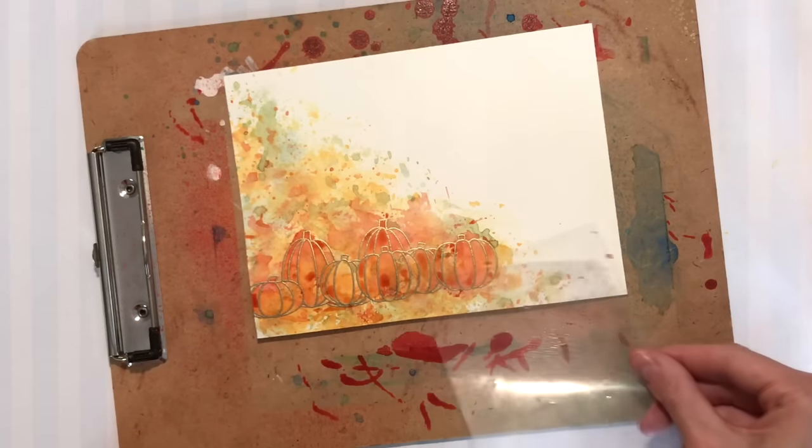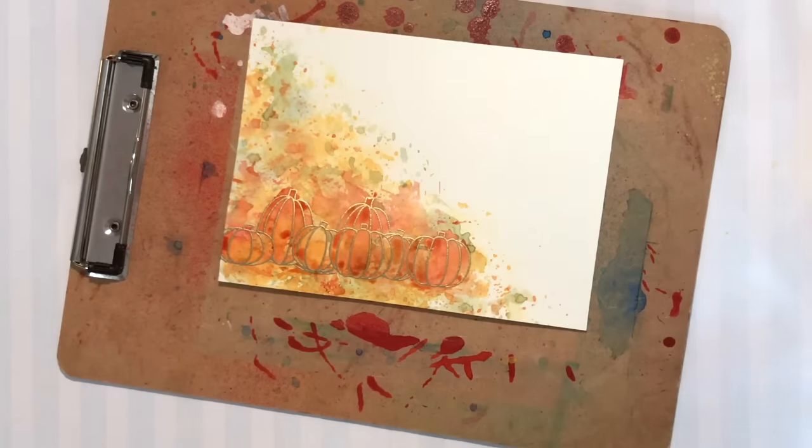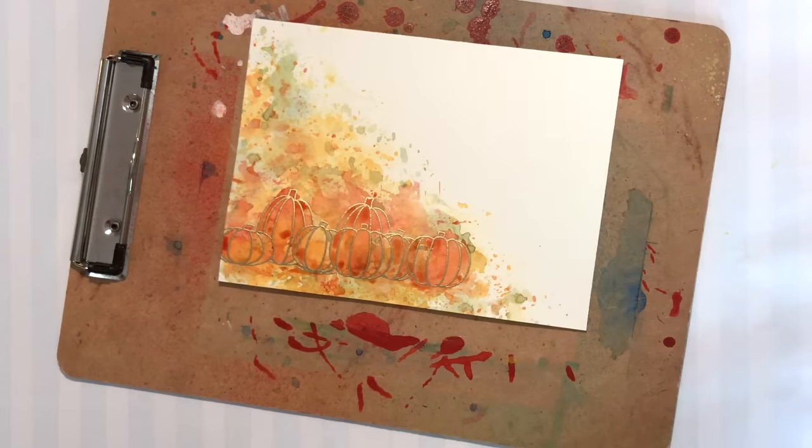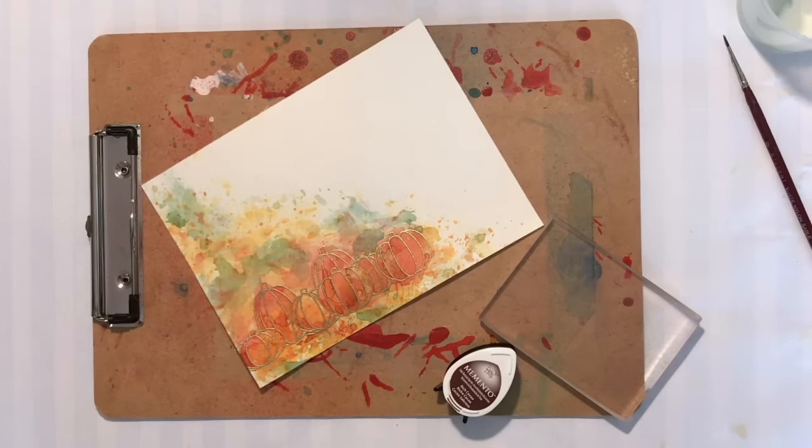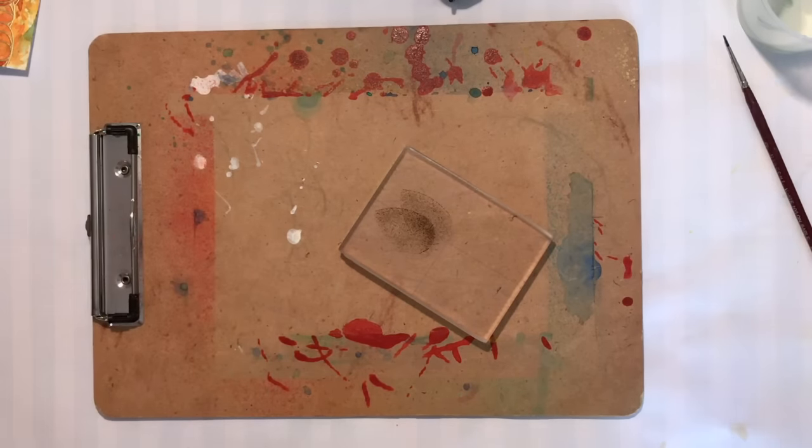Alright, using that corner, you can do that. And I'm going to let that dry now. I'm done with the smushing. Now I'm ready for my sentiment. Oh no I'm not, sorry. I'm going to add a shadow. That's what I'm going to do now.